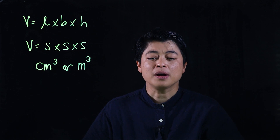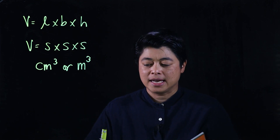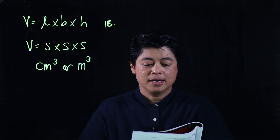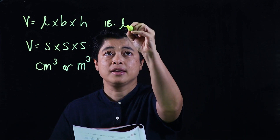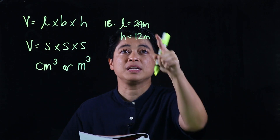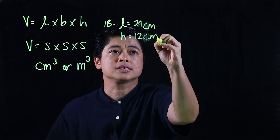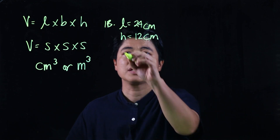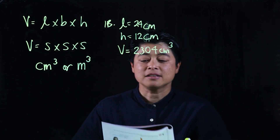Our problems come from pages 36 and 38. Starting with page 36, problem 1b: the length of a cuboid is 24 centimeters and its height is 12 centimeters — make sure to write the correct units. The volume of the cuboid is 2304 centimeters cubed. We need to find the breadth.